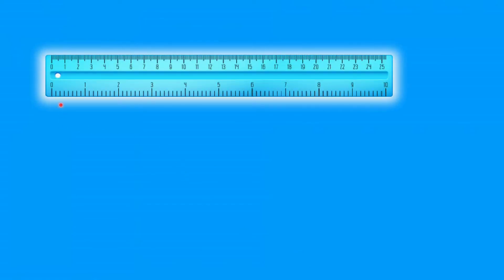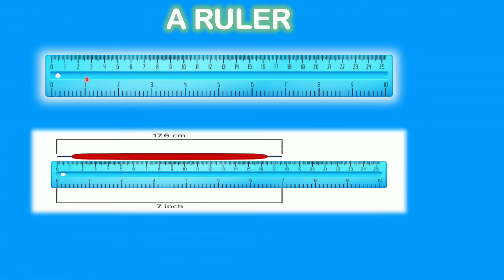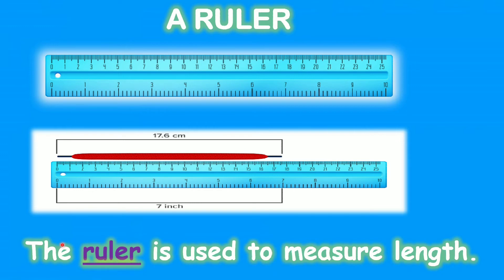Can you guess what this object is? Well, this is a ruler. A ruler helps us measure length or short objects. The ruler is used to measure length. The ruler has both centimeters and meters — a ruler can have centimeters, meters, or inches.